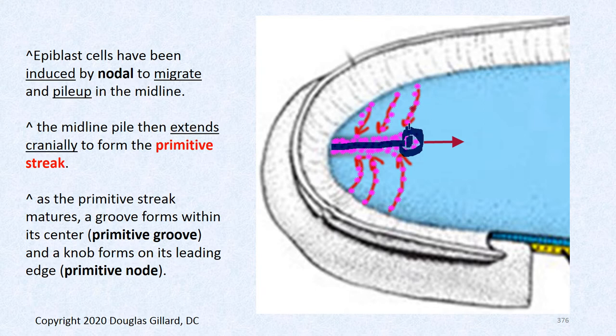Later on, cells will go through that primitive pit and primitive groove — not to form the primitive streak, which is already formed, but more epiblast cells will migrate through to make mesoderm, endoderm, a pre-chordal plate, and a cloacal membrane, and an oropharyngeal membrane.